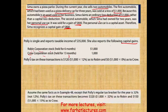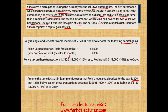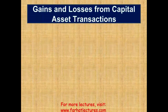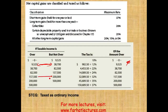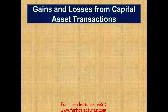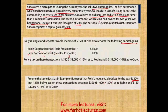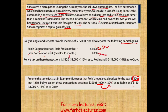Assume the same facts except that Polly's regular tax bracket is 32%, not 12%. In that case, the short-term $1,000 is subject to ordinary income tax at 32%, and the long-term $1,000 is subject to 15% long-term capital gains tax — because she falls in the 32% tax bracket. So: $1,000 × 32% = $320, and $1,000 × 15% = $150. That would be Polly's tax bill.